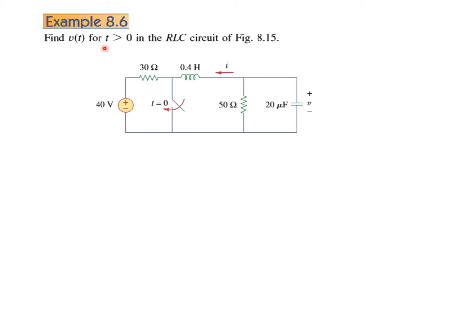We have to find voltage V(t), voltage across the capacitor for t greater than 0 in the RLC circuit. So first of all we will see how this becomes a parallel RLC circuit. How does this circuit form a source free parallel RLC circuit? That is my question.